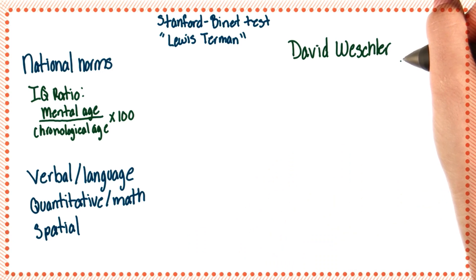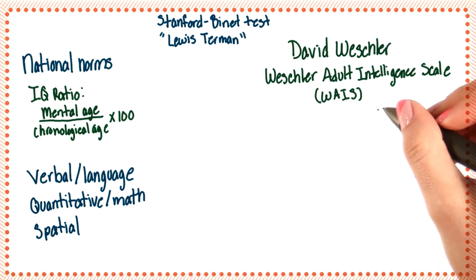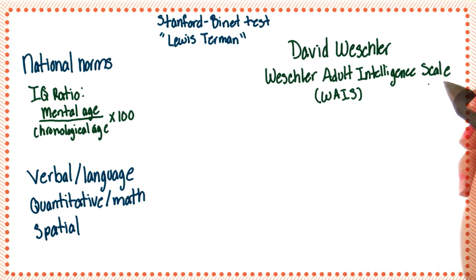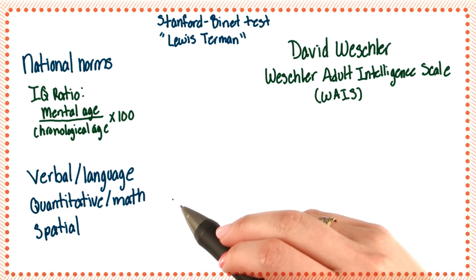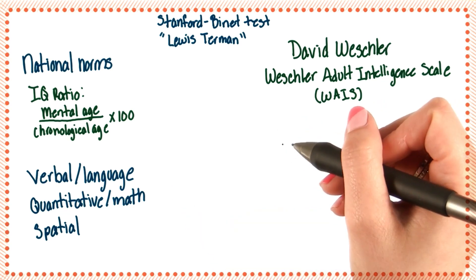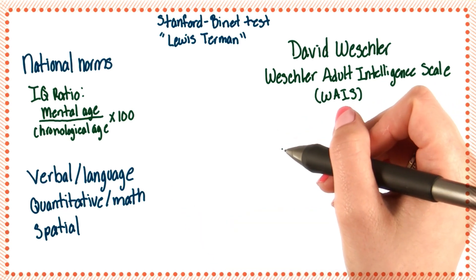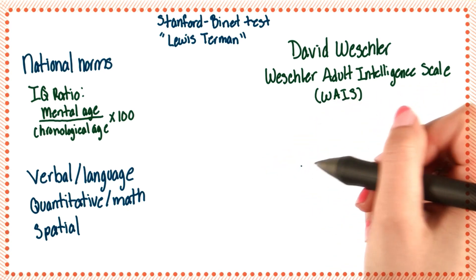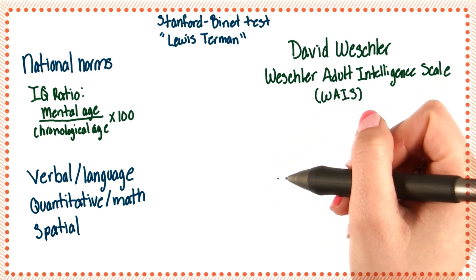David Wechsler solved this problem by creating a test of intelligence for adults called the Wechsler Adult Intelligence Scale. This looked at the same domains as the Stanford-Binet test, but asked questions that were more adult-appropriate. For example: why do individuals buy automobile insurance? Or, in what ways are boats and trains the same?